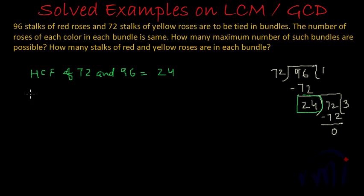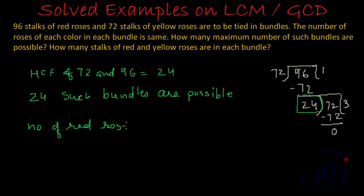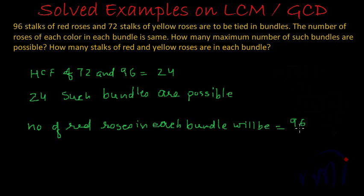That means 24 such bundles are possible, in which the number of red roses will be 96 divided by 24. 12, 2's are 24, 12.